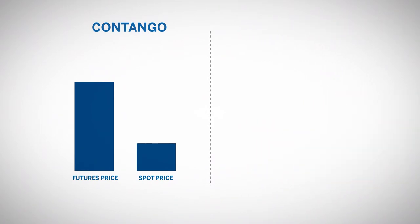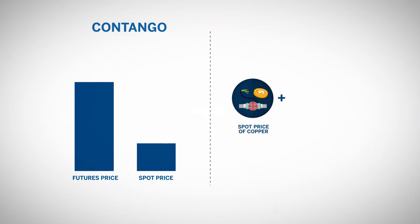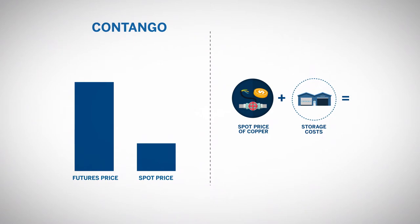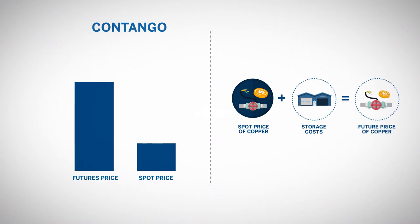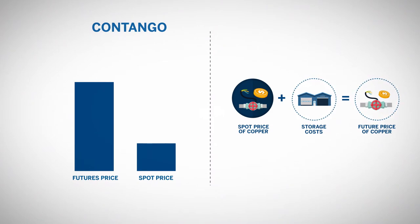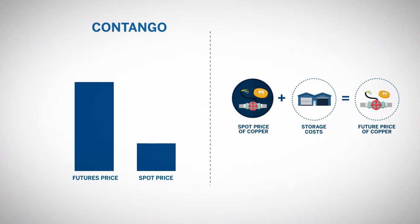For example, non-agricultural products typically trade in contango, where the futures price is higher than the spot price. This is typically due to the carry cost of buying the commodity at the spot price now, storing the commodity, and selling it in the future. The holder of the physical commodity would have to be compensated for these costs. Therefore, the futures price is higher. If not, there would be arbitrage opportunities.